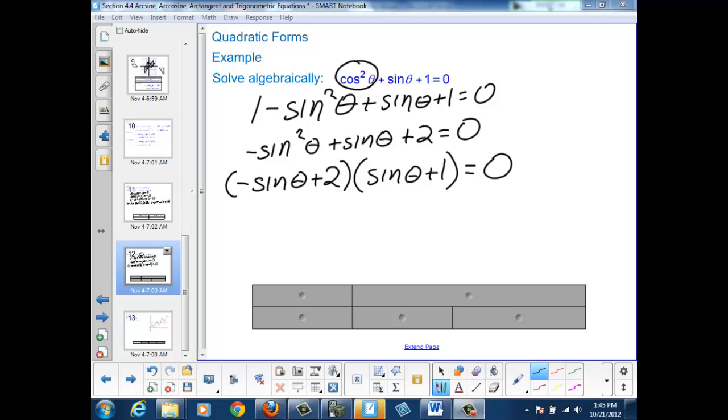So now I can see I have two sets of solutions. Either negative sine theta plus 2 equals 0, or sine theta plus 1 equals 0.